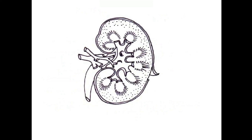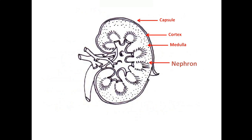Here's the diagram of the kidney. Let's label it: capsule, cortex, medulla, and the nephron. Among these parts, nephron is the most important, and so we will study it in detail.